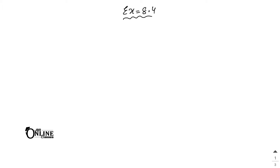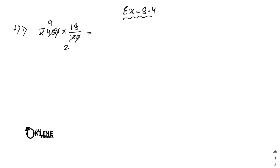The first problem: 18% of ₹450. That means ₹450 × 18/100. Always remember that for percentage you divide the number by 100. The zeros cancel out: 5 × 9 = 45, then 2 cancels with the remaining factor, giving ₹81 as your answer.